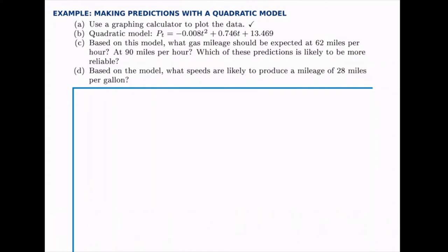We've plotted the data, we found the model shown there in part B, and then parts C and D ask us to make some predictions. Part C, we're going to predict what gas mileage is expected at 62 miles per hour and then at 90 miles per hour.